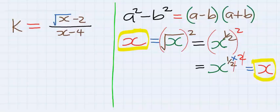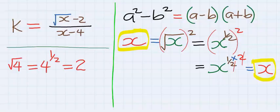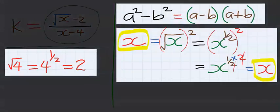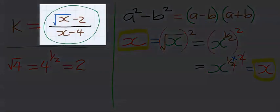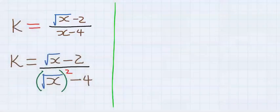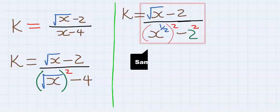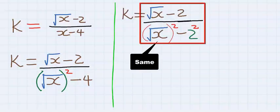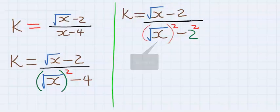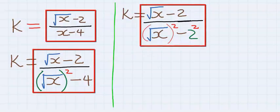Also, square root of 4 is the same as 4 to the power of half, and it is the same as 2. I'm going to use all this to modify the expression. Hence k is equal to this, and x has not changed, and k can further be written as this.